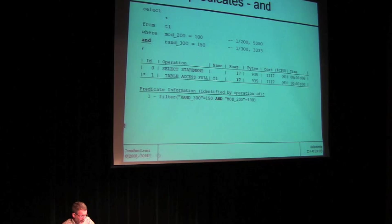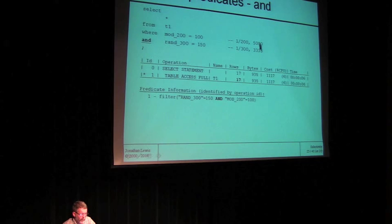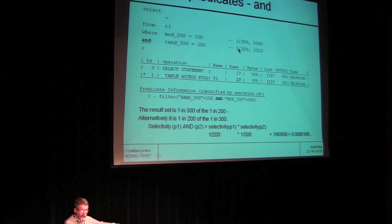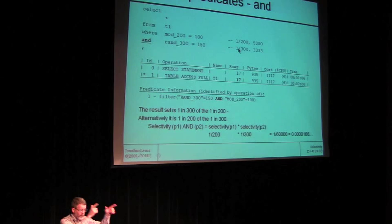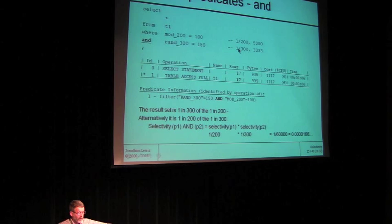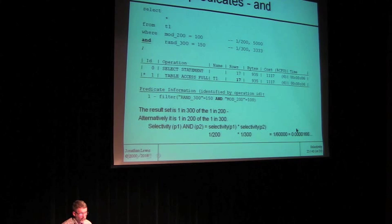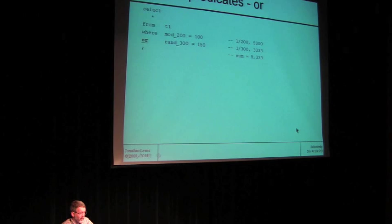I've got five minutes left, which means I'm going to accelerate slightly. Multiple predicates: SELECT WHERE mod_200 equals something AND round_300 equals something. We know we've got 5,000 rows for this one and 3,333 rows for that one. Oracle's prediction is 17 rows. How? Oracle says: of the 1-in-300 for this predicate, 1-in-200 will look like that — so it's selectivity multiplied together. One in 200, one in 300 gives us one in 60,000 — that's the combined selectivity, multiplied by a million rows. So ANDing together predicates simply means multiplying the predicate selectivities together.